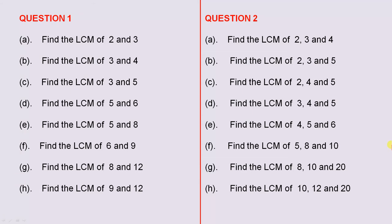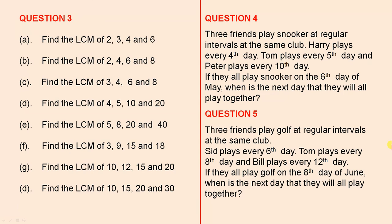We'll go on to the next worksheet. Question 3: here we have 4 numbers in each question. So just for the first one, find the lowest common multiple of 2, 3, 4, and 6. And we have to do the same procedure for every single question.